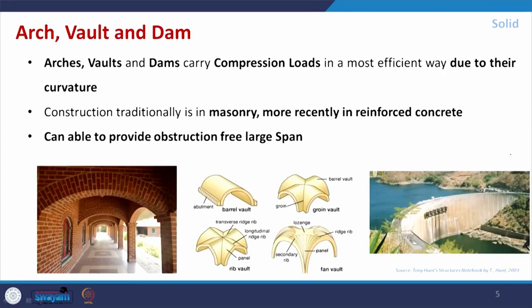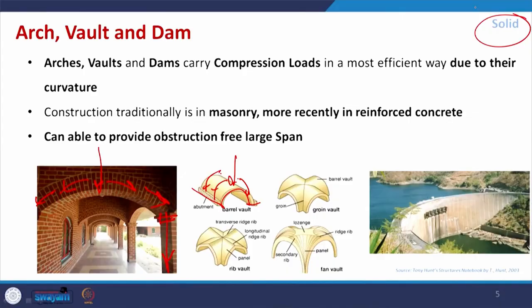The arch and vault are very useful compressive structures — due to curvature, load is very well transferred. Because of the symmetry of the arch, it transfers load to the supporting column. The same is true for the vault. The dam is also in this category — built very large, made of concrete retaining wall or sometimes masonry. All of these are under the profile of the solid structure typology.